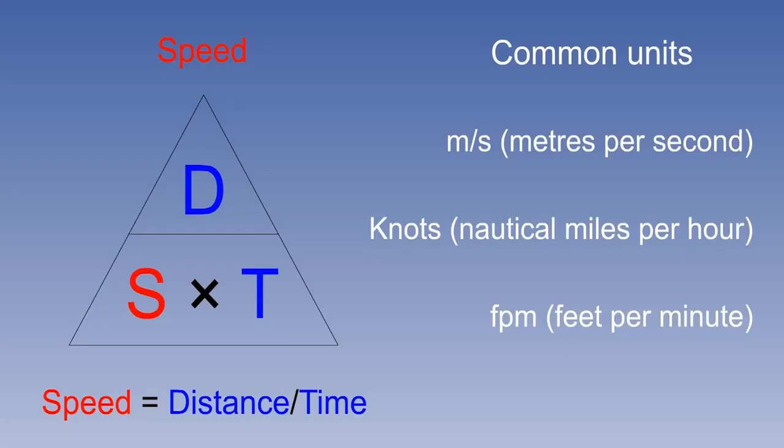Two knots is roughly one metre per second. This means, to find the approximate speed in metres per second, you halve the number in knots. For example, an aeroplane flying at 300 knots true airspeed is therefore flying at approximately 150 metres per second. Conversely, one metre per second is roughly two knots. So, if you were given a wind speed in metres per second, you would double it to get an approximate wind speed in knots. For example, a wind of 10 metres per second is approximately 20 knots.